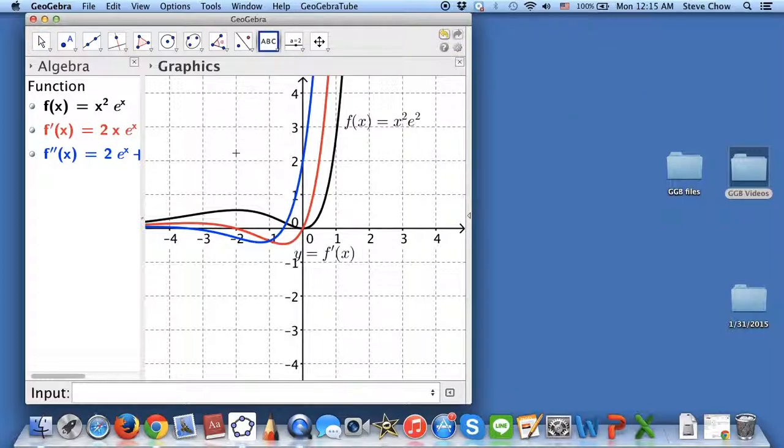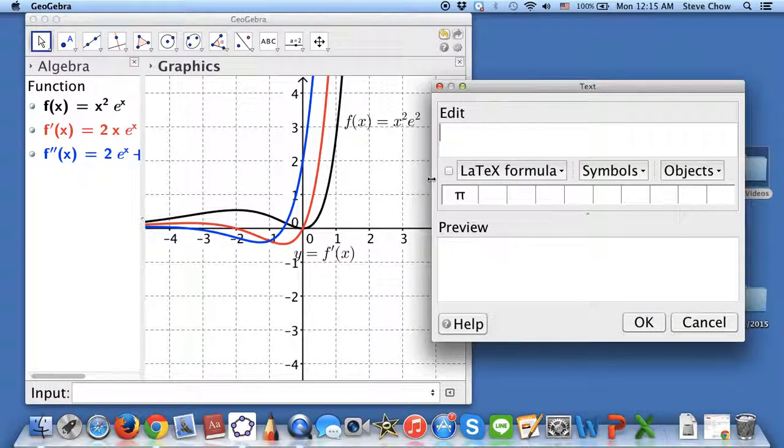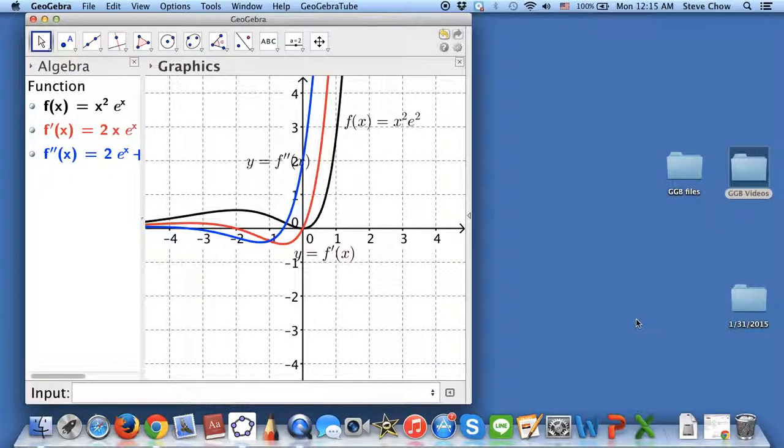And let me do another one. So let me put the text box right here. This is going to be the second derivative. LaTeX formula. So it looks prettier. Okay. So now, I would like to also make this in red and blue respectively.